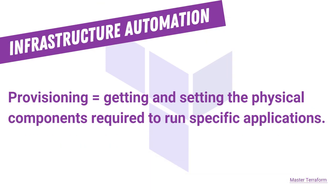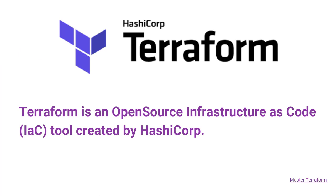What does infrastructure automation mean? When you think of infrastructure automation, you normally think of provisioning, which means getting and setting the physical components required to run specific applications. Terraform is an open source infrastructure as code tool created by HashiCorp. It allows engineers to programmatically provision the physical resources required by the applications to run. Also note that Terraform is platform agnostic. Infrastructure as code is a DevOps practice that manages an application's underlying infrastructure through programming.